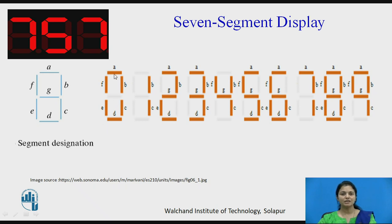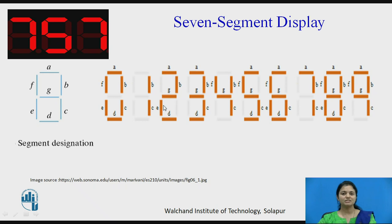For example, for displaying 0, only segment G will be off, and for displaying 1, only segments B and C will be on. Similarly, for displaying 2, we are having segments A, B, G, E, and D on.